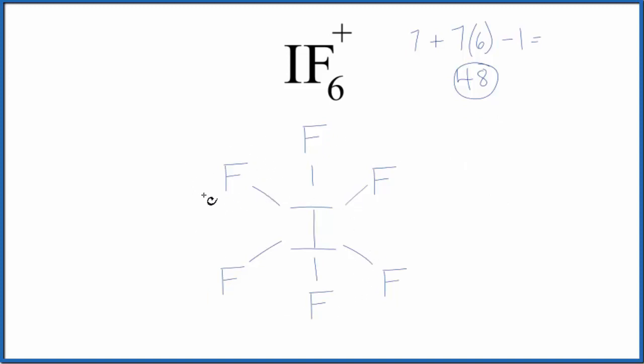Let's go ahead and complete the octets for each fluorine. So for this fluorine here, it now has 2, 4, 6, 8 - the octet's complete. I'll do the rest of these here, and that will use up all the valence electrons.